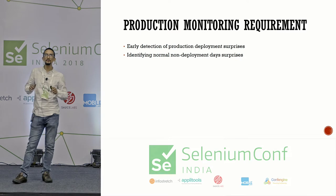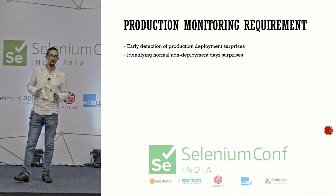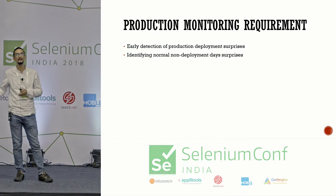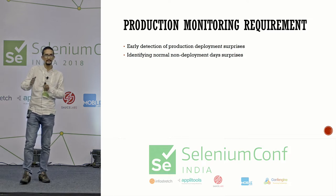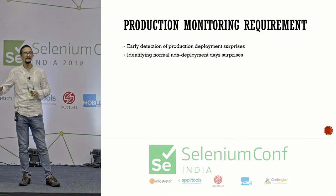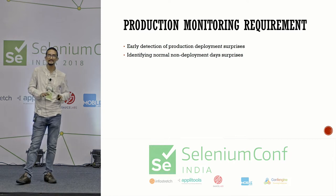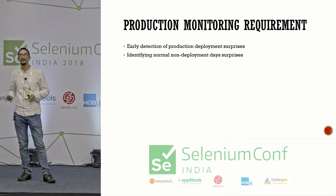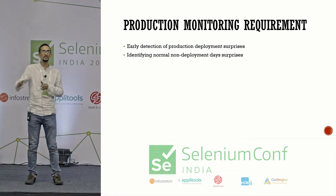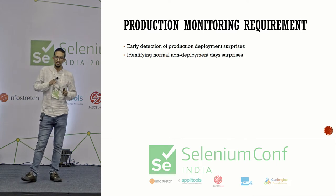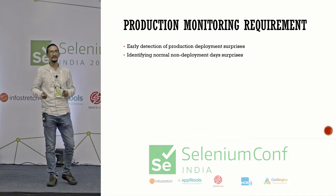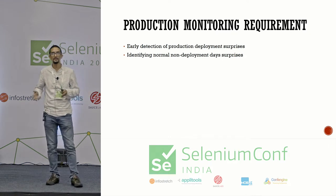When you have to release features day by day and automation is not that stable, you have to make sure that after you ship your code, it should be up and running. As a tester, developer, or any software professional, your responsibility does not end when you deploy the code. Your actual responsibility starts after that as well. Early detection of any production issue is one key factor for production monitoring.